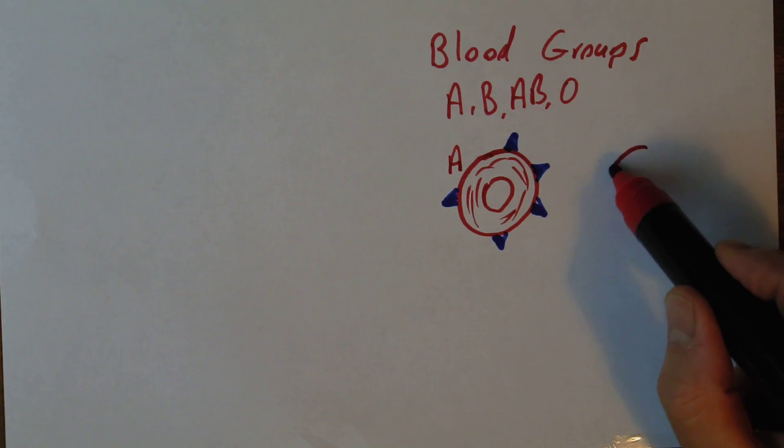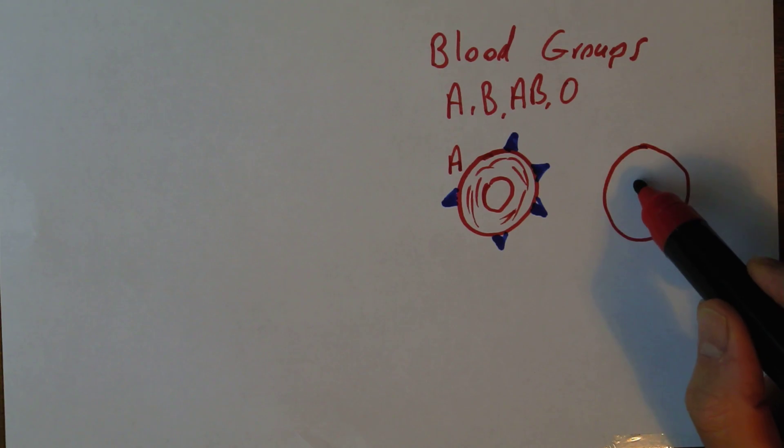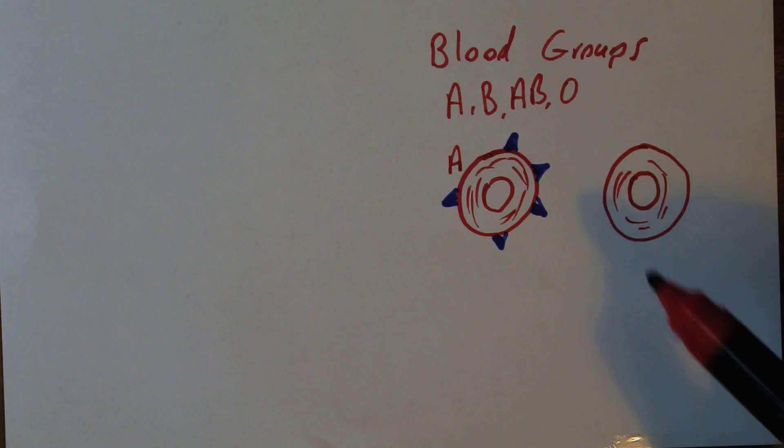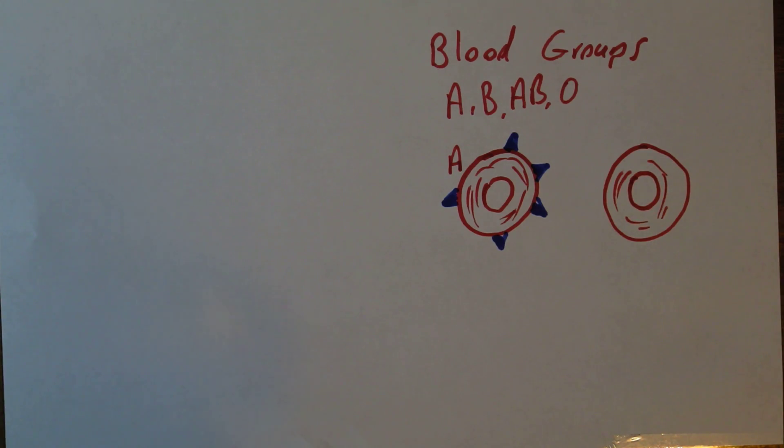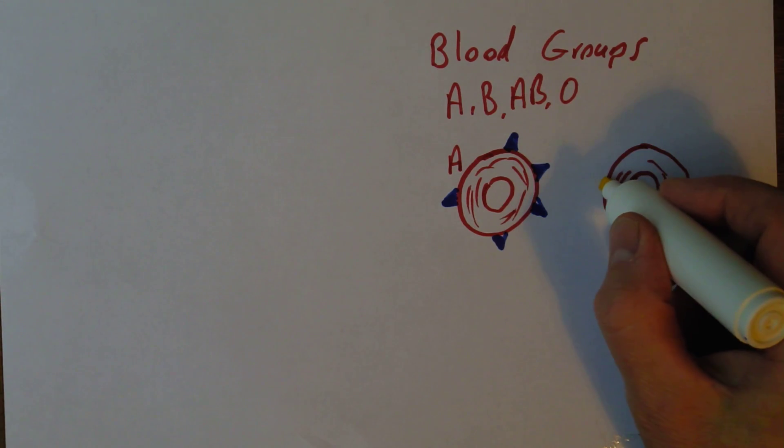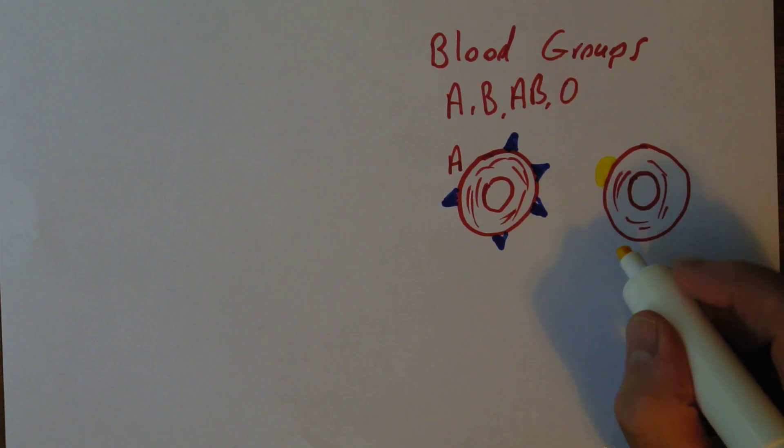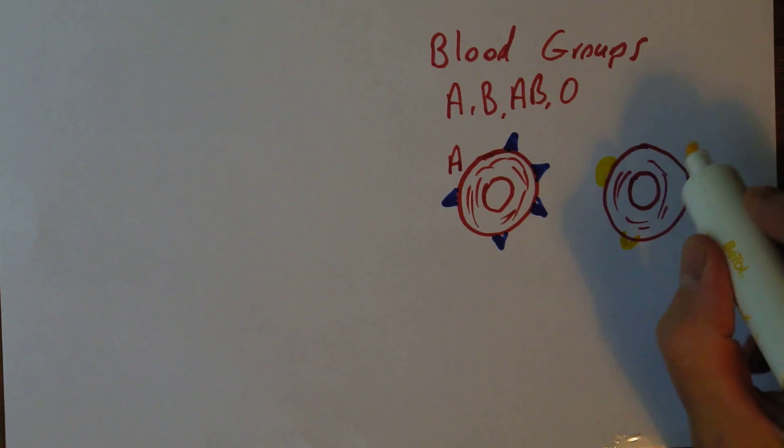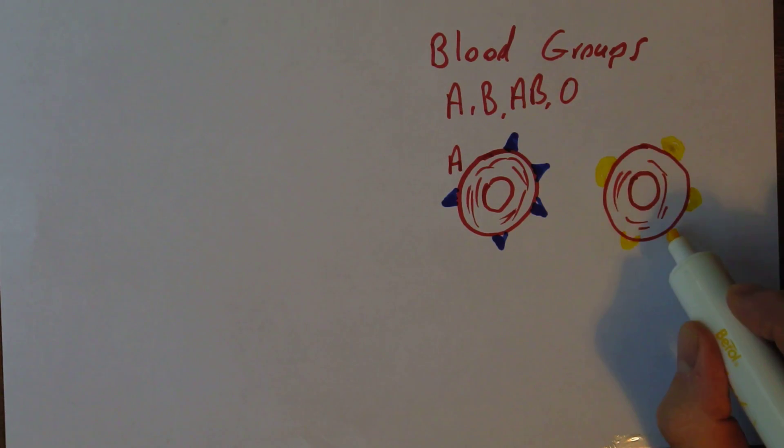Blood group B again is determined by the nature of the red cells. In blood group B there are B antigens on the surface, represented by these semicircles. So that's blood group B.